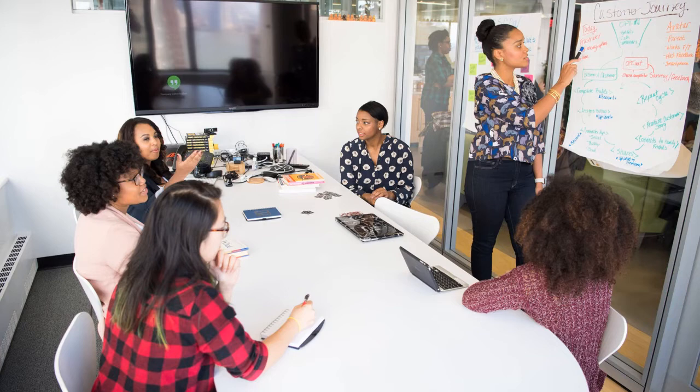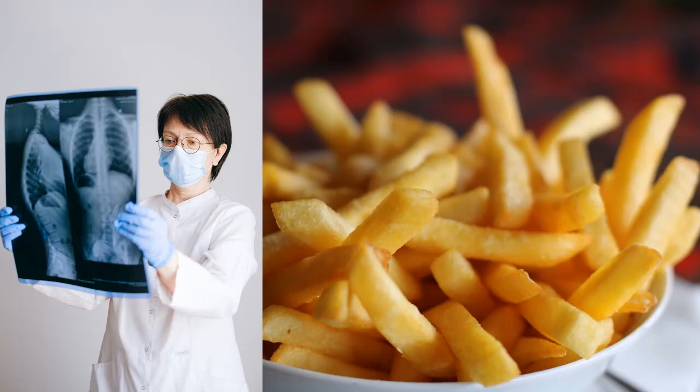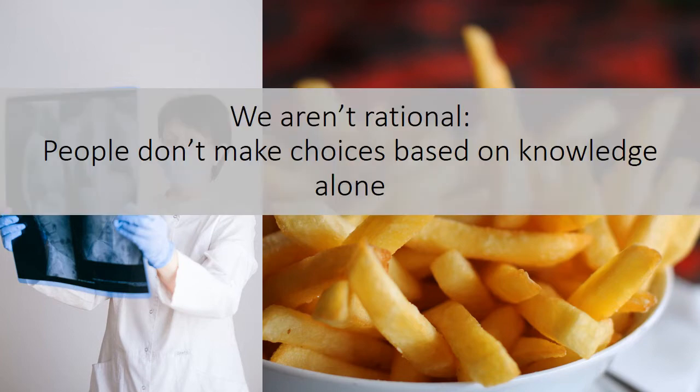I imagine you came up with some great ideas. Some of you may have thought about education. Often when we think about behavior and behavior change in the context of conservation, we go first to education and awareness — we think if we educate people, inform them, increase their awareness and knowledge, they'll act in more conservation-friendly ways. But it turns out this isn't often the case because people are complex and a lot of things drive our behavior. Think about the doctor who knows all about lung cancer but may still choose to smoke. I know I eat my fair share of fried foods even though I know it's not the healthiest choice. The first important thing to know about people is that we are not purely rational beings — we don't make choices based on knowledge alone.